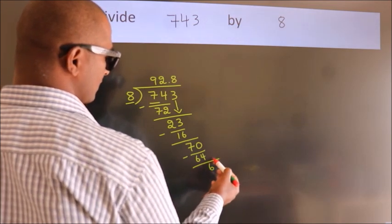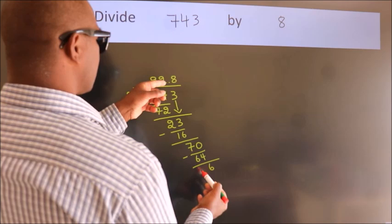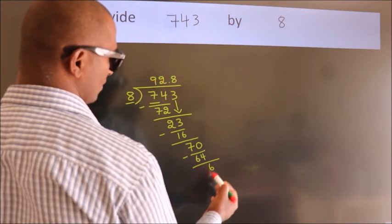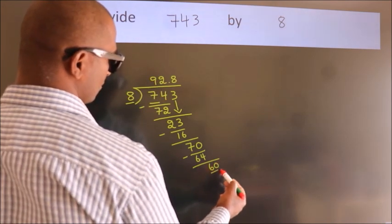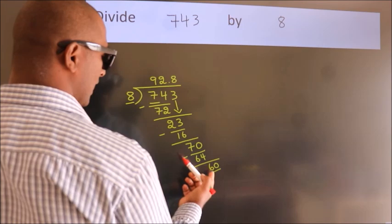After this, we already have the decimal. So directly take 0. So 40. When do we get 40?